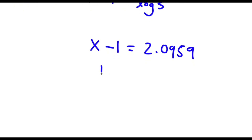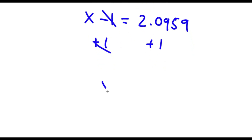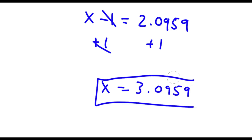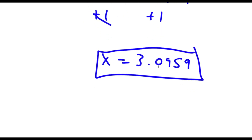Now if I add 1 on both sides, these two cancel out. Now I'm left with x is equal to 3.0959. So this is my answer.